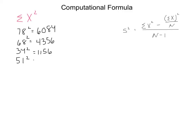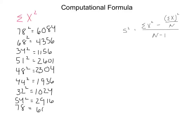Then I go to 34 squared which gives me 1156, 51 squared gives me 2601, 48 squared gives me 2304, 44 squared gives me 1936, 32 squared equals 1024, 54 squared equals 2916, 78 squared which we did at the first one is still 6084, and finally 45 squared is 2025.